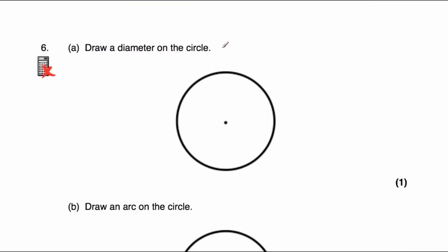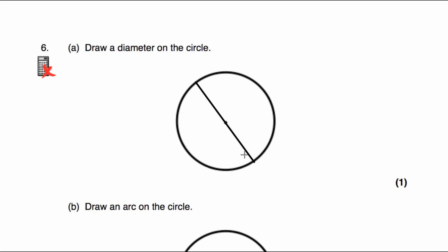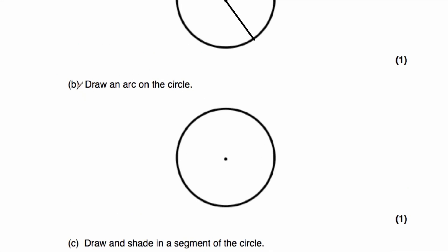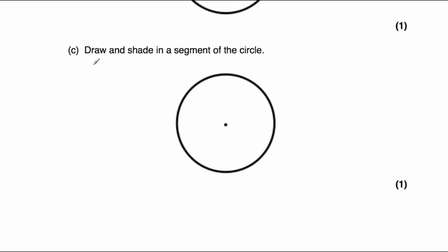Question six gives us some circles and asks us to draw things on them. Part A: draw a diameter — a line from one point on the circle to another passing through the centre. Part B: draw an arc, which is part of the circumference. I'll draw a small minor arc here — it's part of the circle. Part C: draw and shade a segment. A segment is the region between a chord and an arc. We draw a chord, identify the arc, and the segment is the region in between.